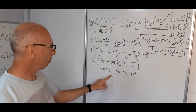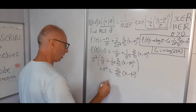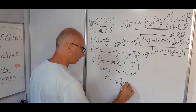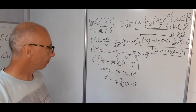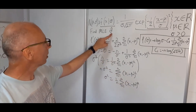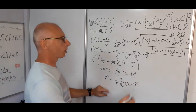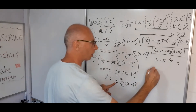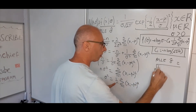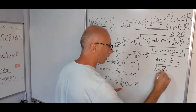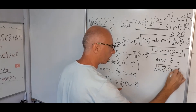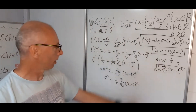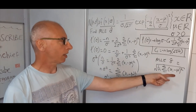Now dividing both sides by n, we get sigma squared equals 1 over n times the sum from i equals 1 to n of x i minus mu squared. So we have the maximum likelihood estimate for sigma squared. Taking the square root, the MLE sigma-hat equals the square root of 1 over n times the sum from i equals 1 to n of x i minus mu squared. That looks right, as it resembles what we'd expect the standard deviation to look like.